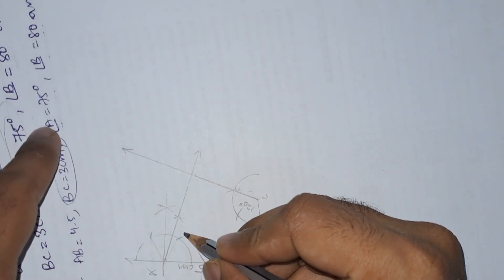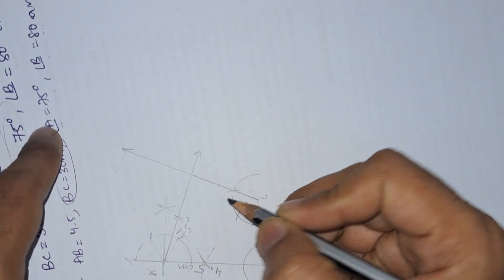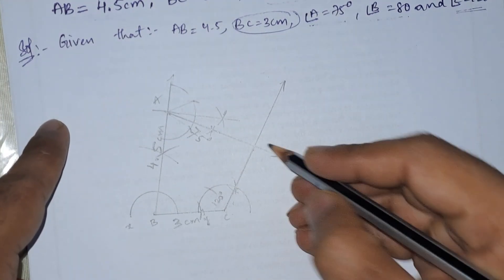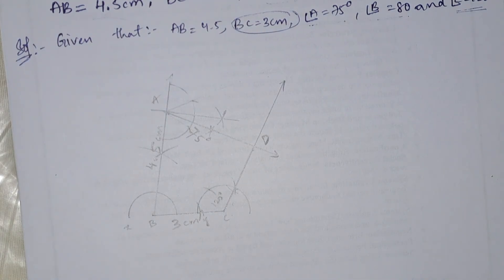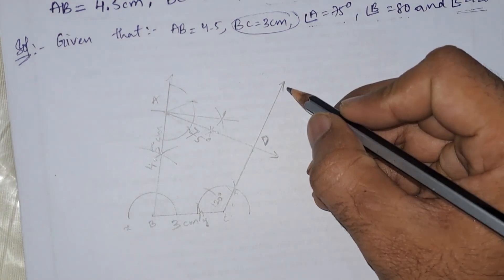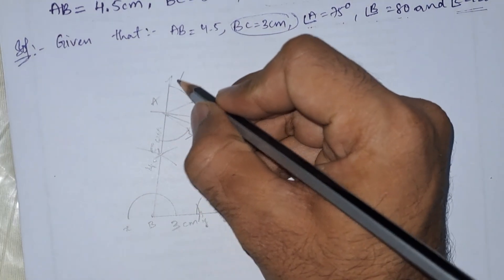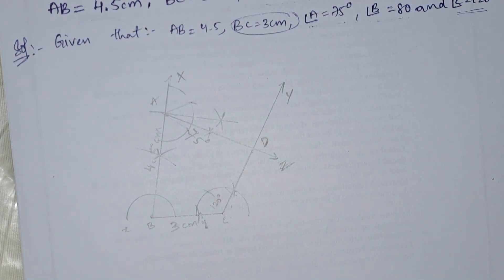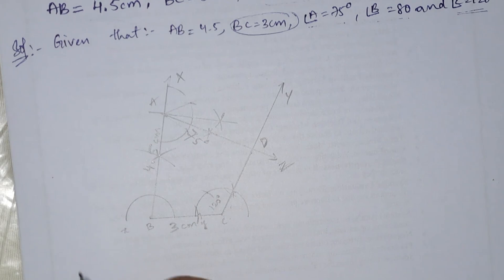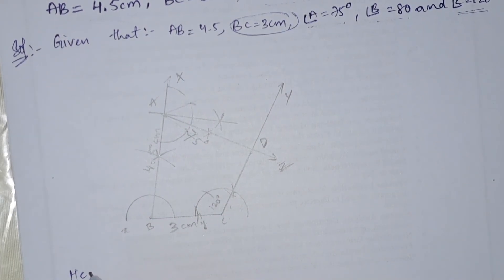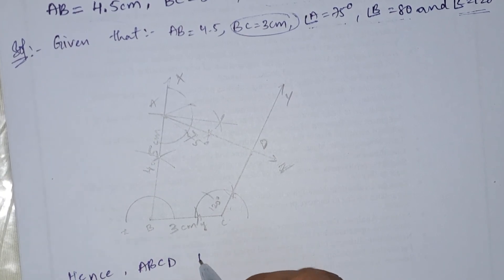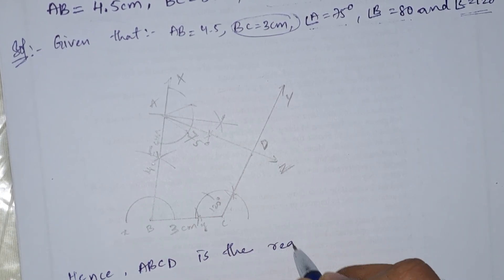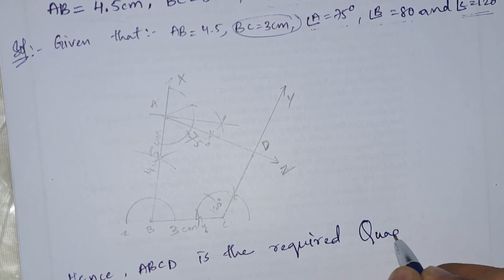Here we can mark 75 degrees. Labeling the vertices A, B, C, D — this is the required quadrilateral. We can note the construction reference points as X, Y, and Z. Hence, quadrilateral ABCD is the required quadrilateral.